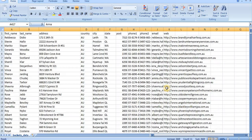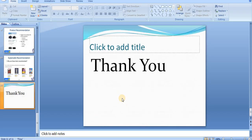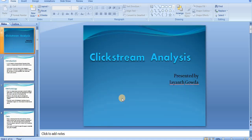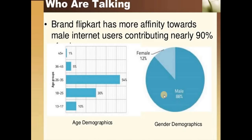After that, they run queries on both databases — joint queries — and generate a report that looks like this. One analysis from the clickstream data shows that 80% of males between the age of 26 to 35 are the majority buyers on Flipkart.